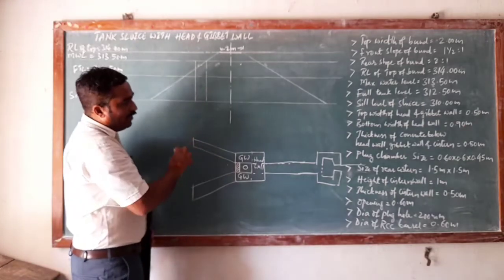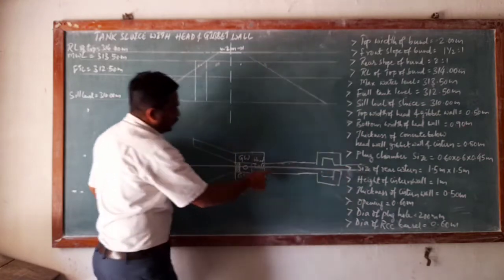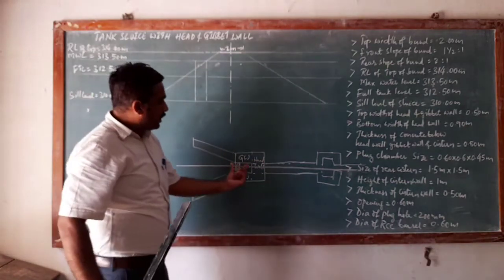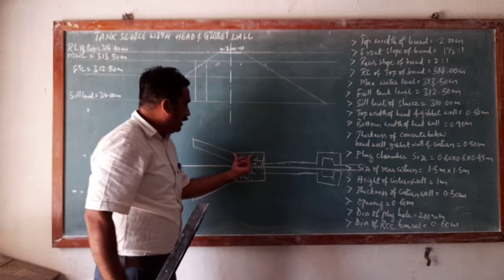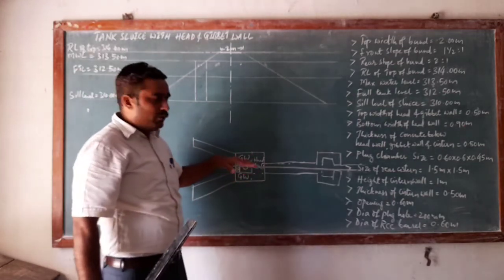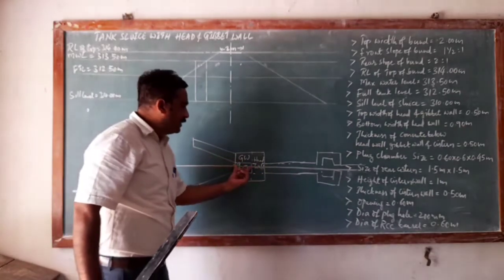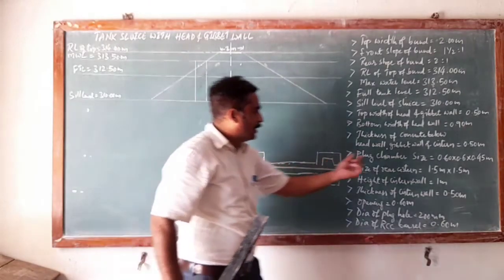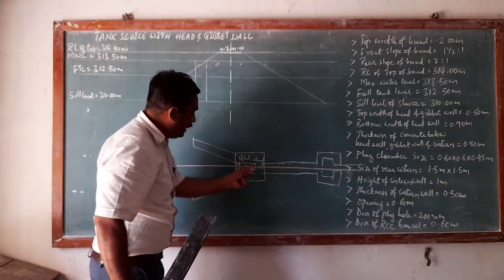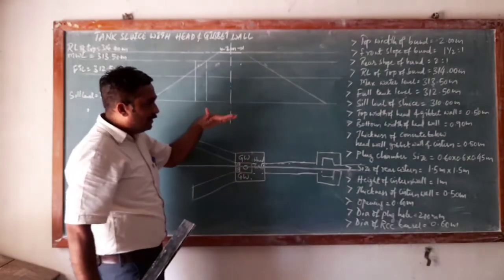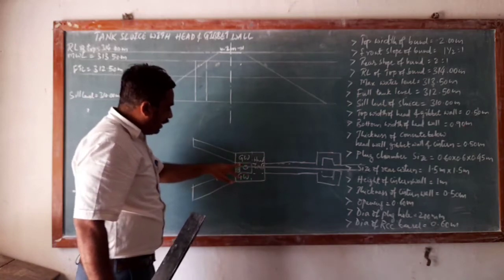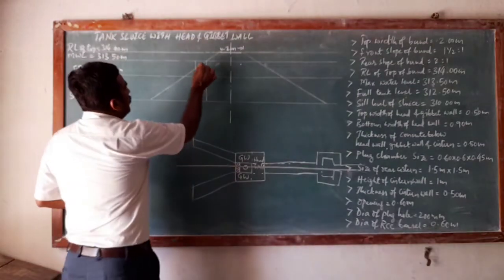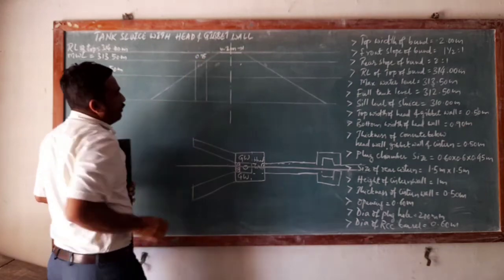I am drawing the longitudinal section, taken at the center of the barrel. What is visible when I cut here is what I will be drawing. The gibbet wall length will not be given directly — we need to assess it from the detail. The dimension of the plug chamber is 0.6 meter. From this side, 0.6 meter, and then one barrier wall — let us take this as 0.15 meter — so totally it will be 0.75 meter. This 0.75 meter portion has been drawn.